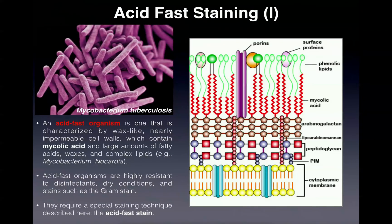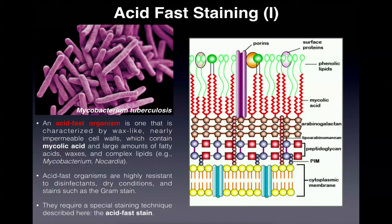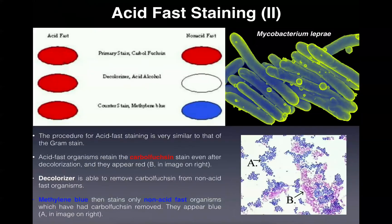The gram stain is ineffective at staining acid fast organisms because of the lipids in the cell wall that make it extremely tough, resilient, and waxy. But in order to get the primary stain carbol fuchsin into the acid fast organisms, you have to apply heat. Without the heat, the carbol fuchsin will not actually penetrate through the cell wall. You have to apply heat from something like a Fischer burner to get the carbol fuchsin to penetrate into the cell. That heating is actually the critical step of the acid fast stain.